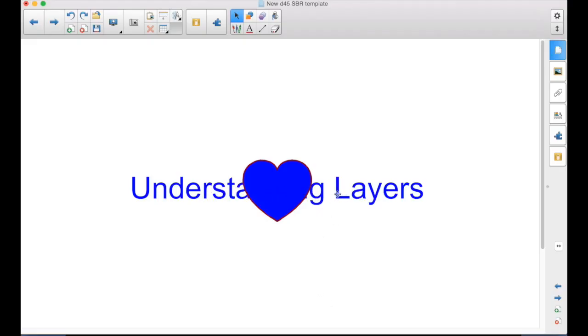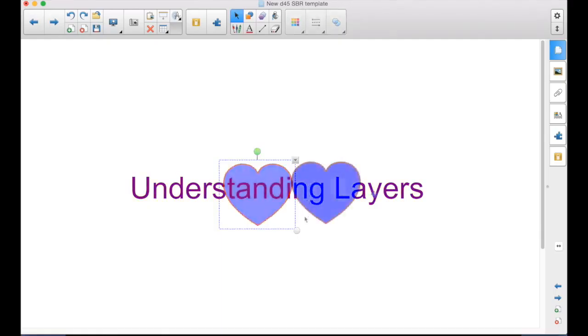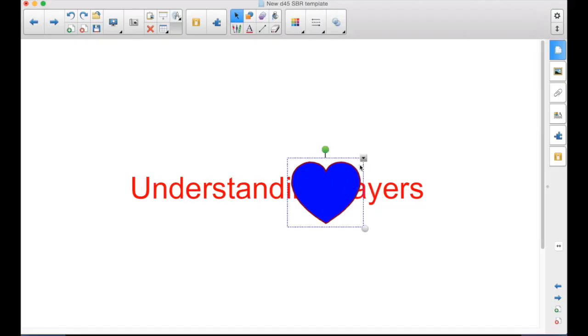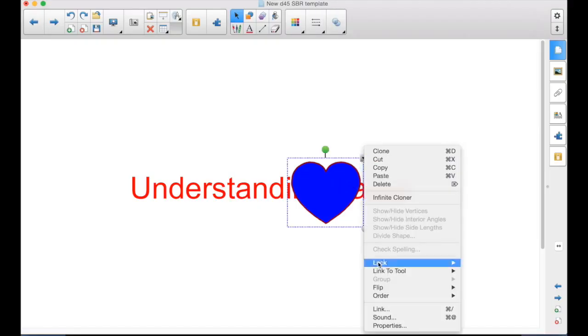Being able to figure out how to create certain effects or how they are working all has to do with layers. You have two objects, and that's not the order that you want them. By clicking on one of them in the drop-down menu, there's an order option.